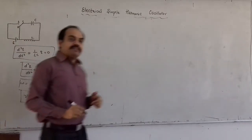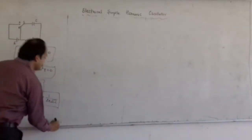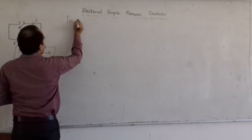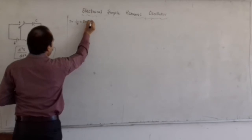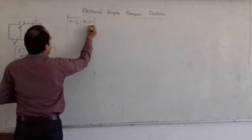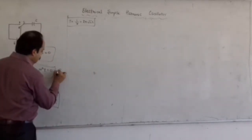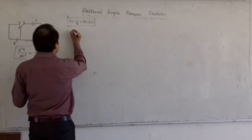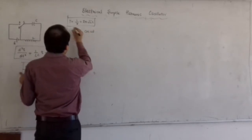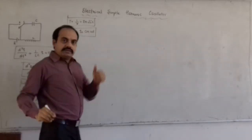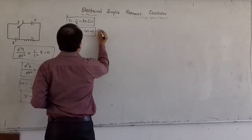We also derived the expression for the time period. The time period T = 1/ν, which comes out to be 2π√(LC). We then took a general solution for the equation of motion, which came out to be q = q₀cos(ωt). This was our equation number 7.